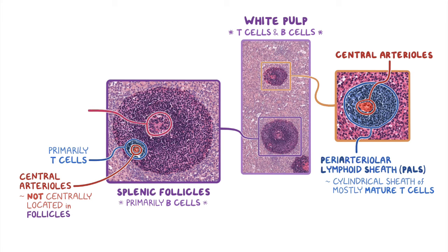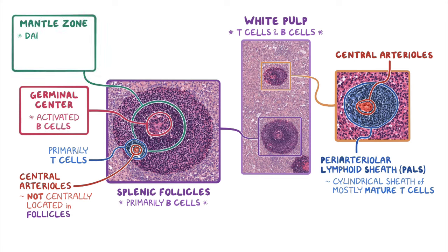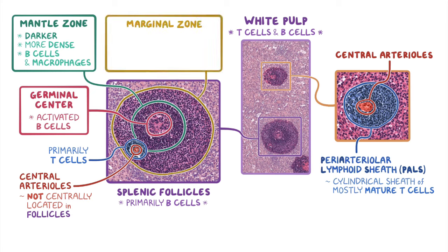The eosinophilic center of the follicle is the germinal center, which contains activated B cells. Immediately surrounding the germinal center is the mantle zone, which is a dark and more dense circle of B cells and macrophages. The outermost region that surrounds the mantle zone is called the marginal zone. This zone is not as densely packed, and forms a thicker ring of B cells, macrophages, and dendritic cells.